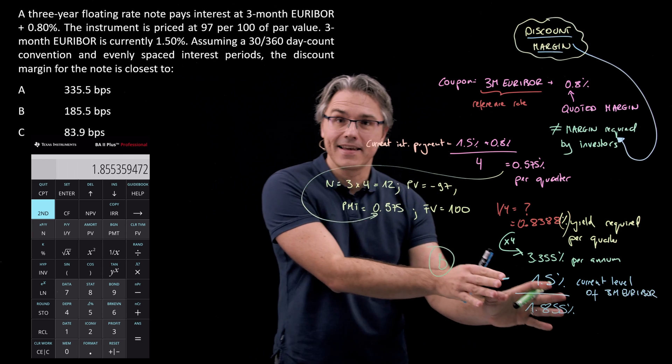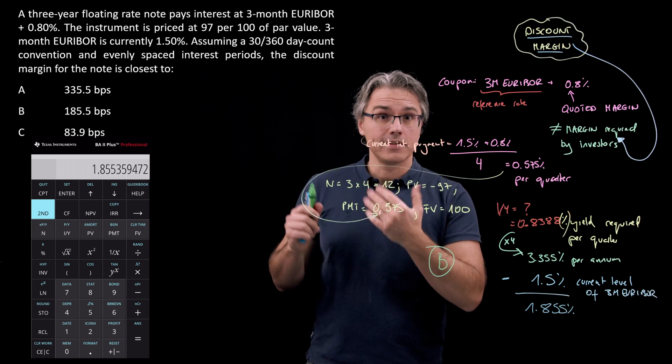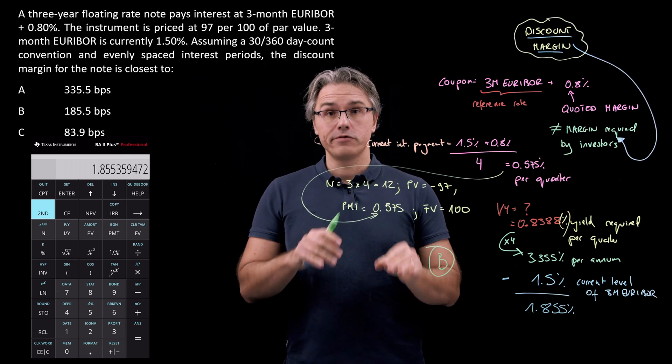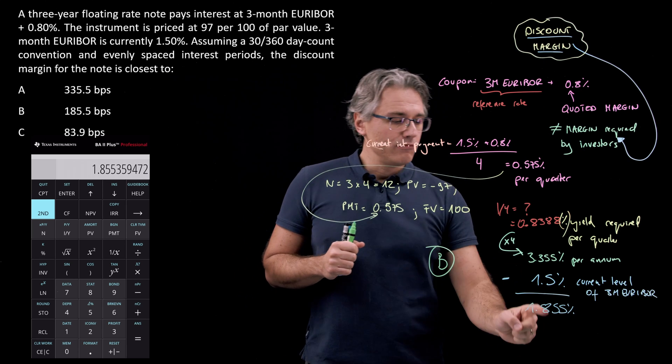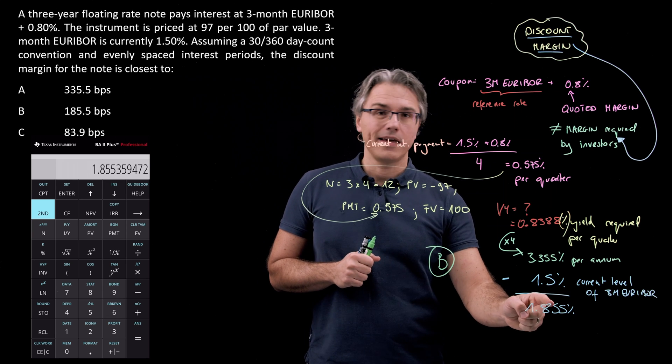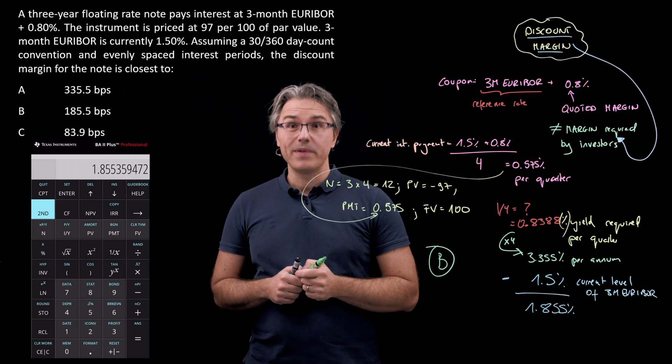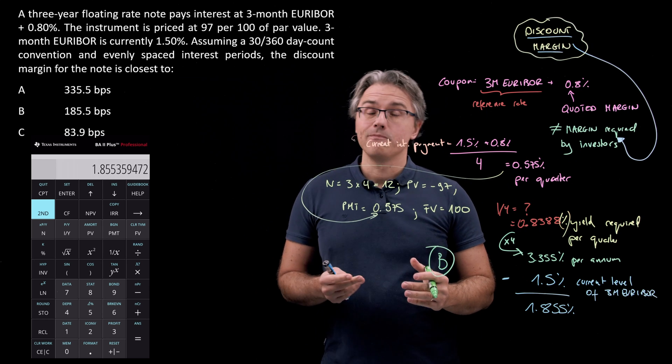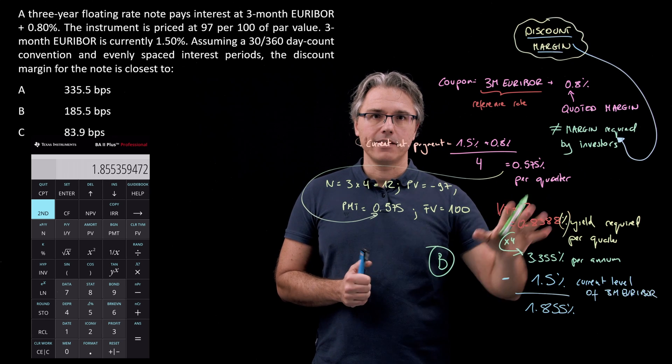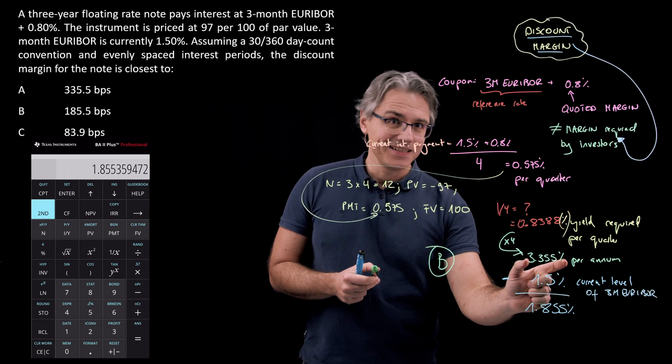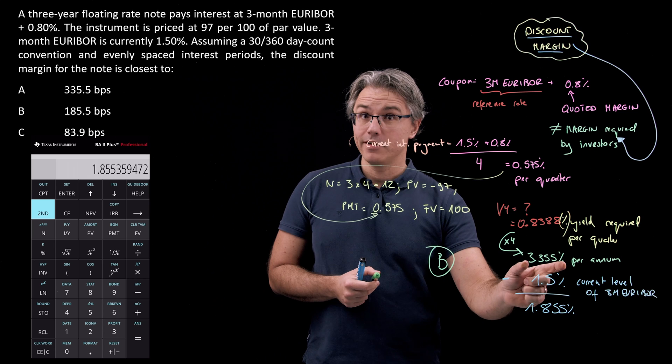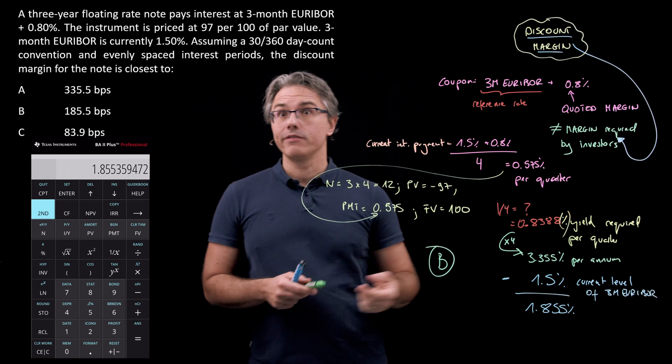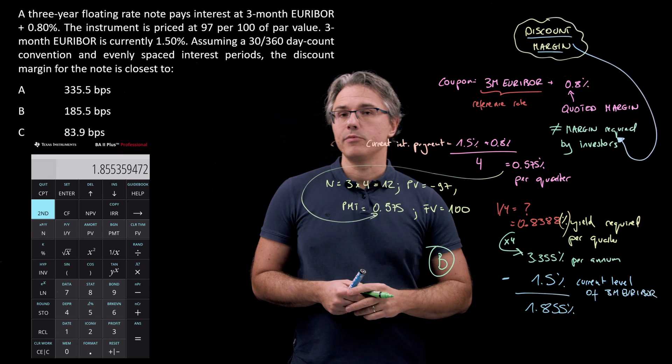This tells us that in order for the note to trade at 100 per 100 of par value, the quoted margin would need to be 1.855% or 185.5 basis points instead of 0.8%. The reason the note trades below par is because this quoted margin is too low compared to what investors are expecting. Don't fall into the trap of thinking that the total yield is the discount margin. That's the required yield given the bond parameters and its price. From this, you deduct the current level of the benchmark or reference rate to get the actual discount margin or required margin.